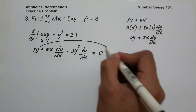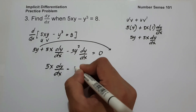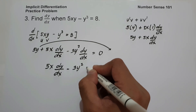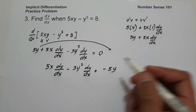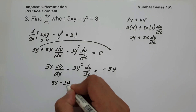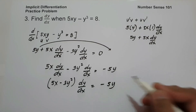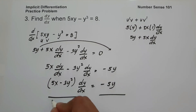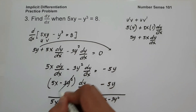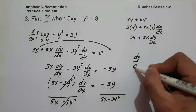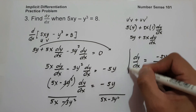The derivative of y cubed is 3y squared dy over dx, and the derivative of 8 is 0. Let us move 5y to the other side: 5x dy over dx minus 3y squared dy over dx equals negative 5y. Factor: (5x minus 3y squared) times dy over dx equals negative 5y. Divide both sides by (5x minus 3y squared). So the value of dy over dx is negative 5y over (5x minus 3y squared). And this will be our answer.